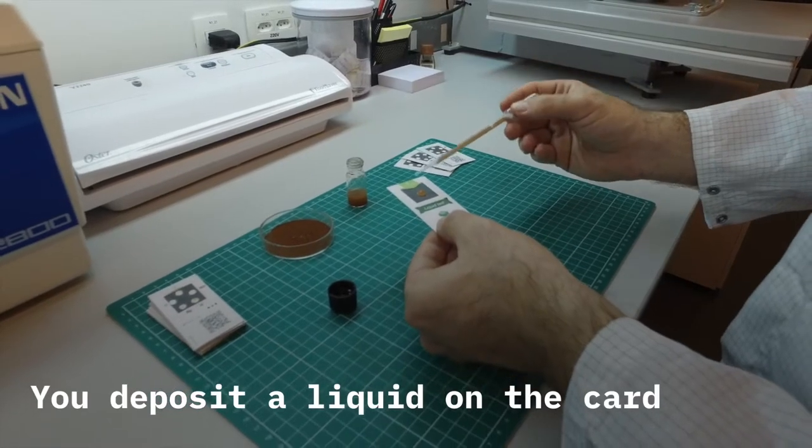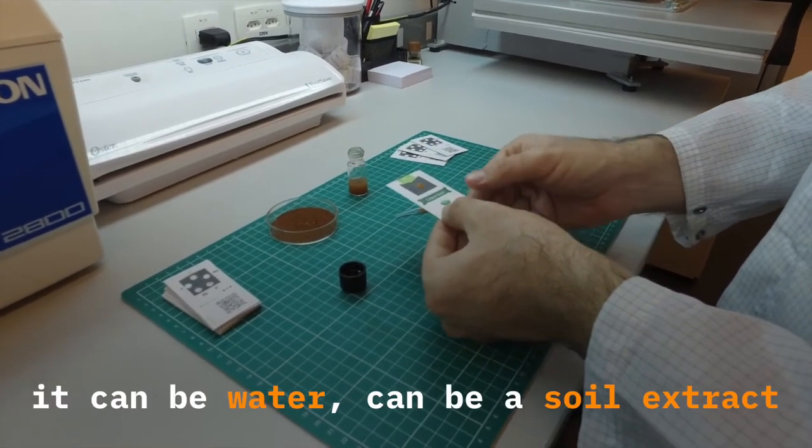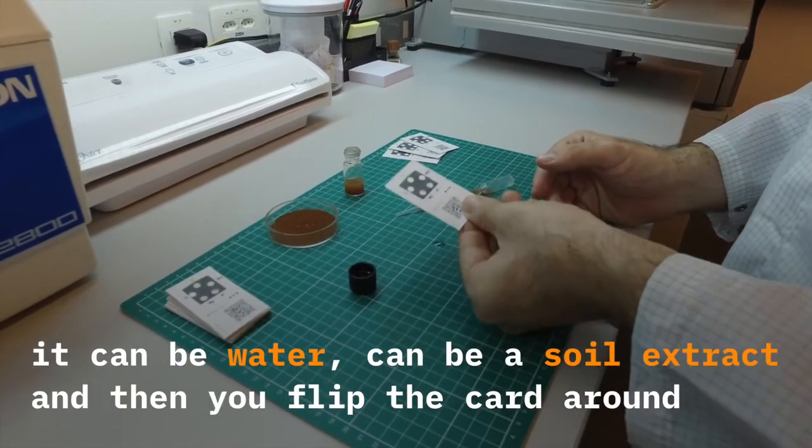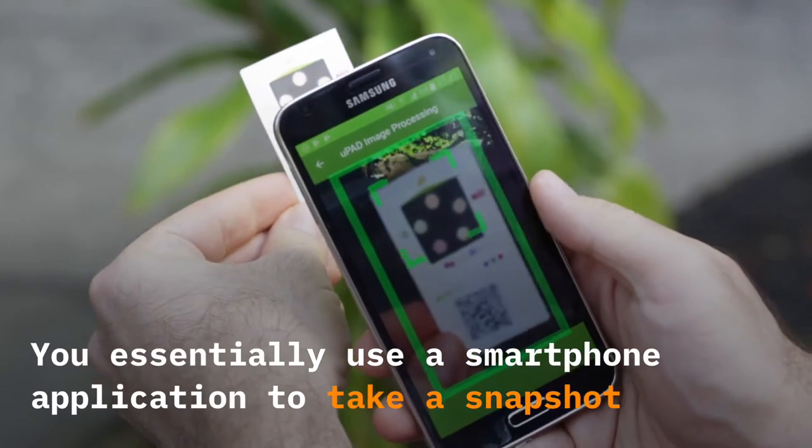You deposit a liquid on the card, just a droplet of the sample. It can be water, it can be a soil extract, and then you flip the card around. You essentially use a smartphone application to take a snapshot.